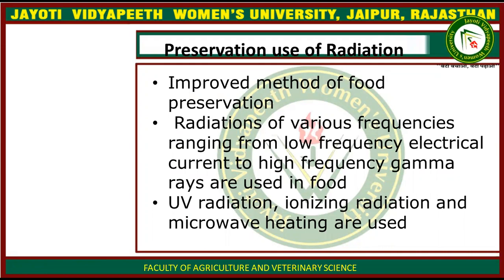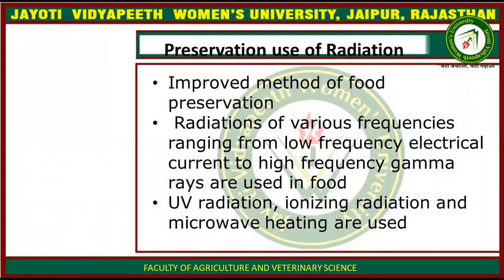It is the most improved method of food preservation. In the radiation method, we talk about different kinds of frequency. The frequency range is from low frequency to high frequency. We use the frequency of rays for the preservation of food, depending on which kind of food you are treating and at which frequency.